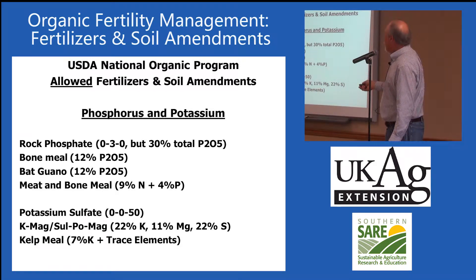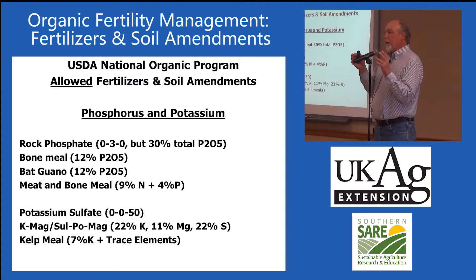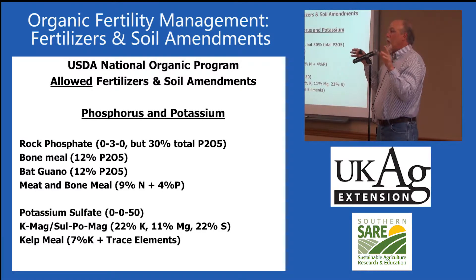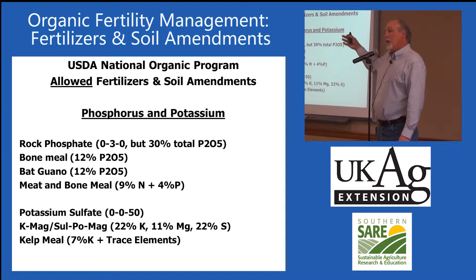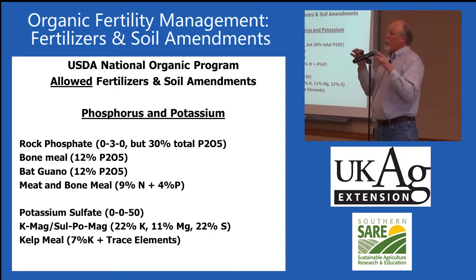I've worked with growers that do that. Also K-Mag, Soplamag, and kelp meal work for potassium. Part of this comes down to how you're going to get these materials. The Ozark Organic Growers, as a cooperative growers association, would put out a list every year asking what members needed. We ordered a 22-ton semi-trailer out of Florida with soft rock phosphate and did drop delivery to farms. That way you get wholesale prices, not retail prices on these products.